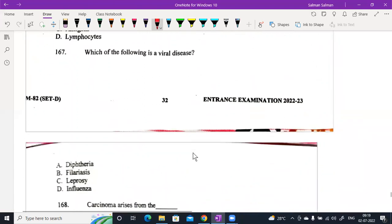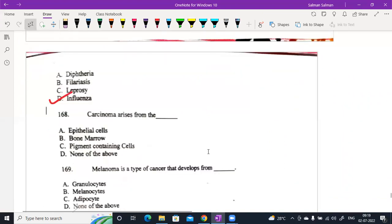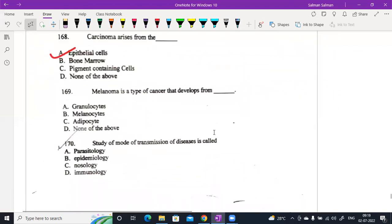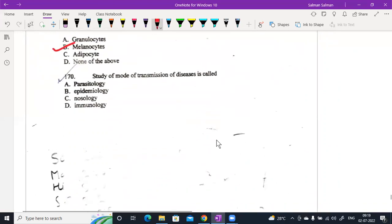The immune system comprises humoral and cell mediated system. Which of the following is a viral disease? It is influenza. Carcinoma arises from epithelial cells. Melanoma is a type of cancer that develops from melanocytes. Study of transmission of disease is called epidemiology.